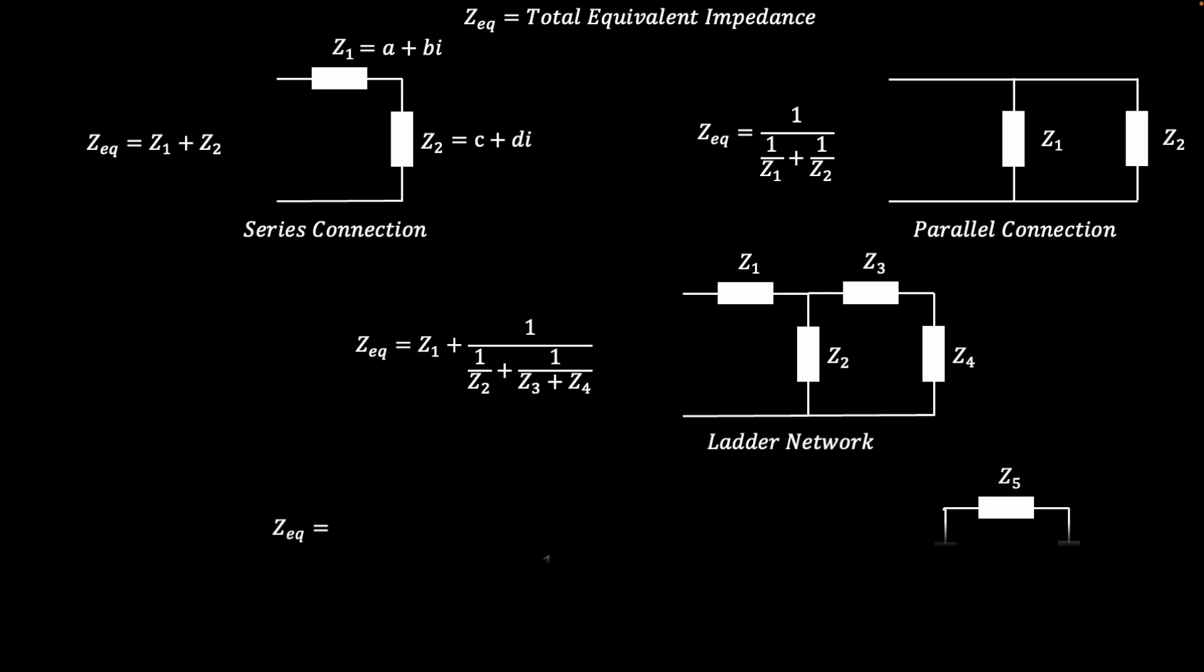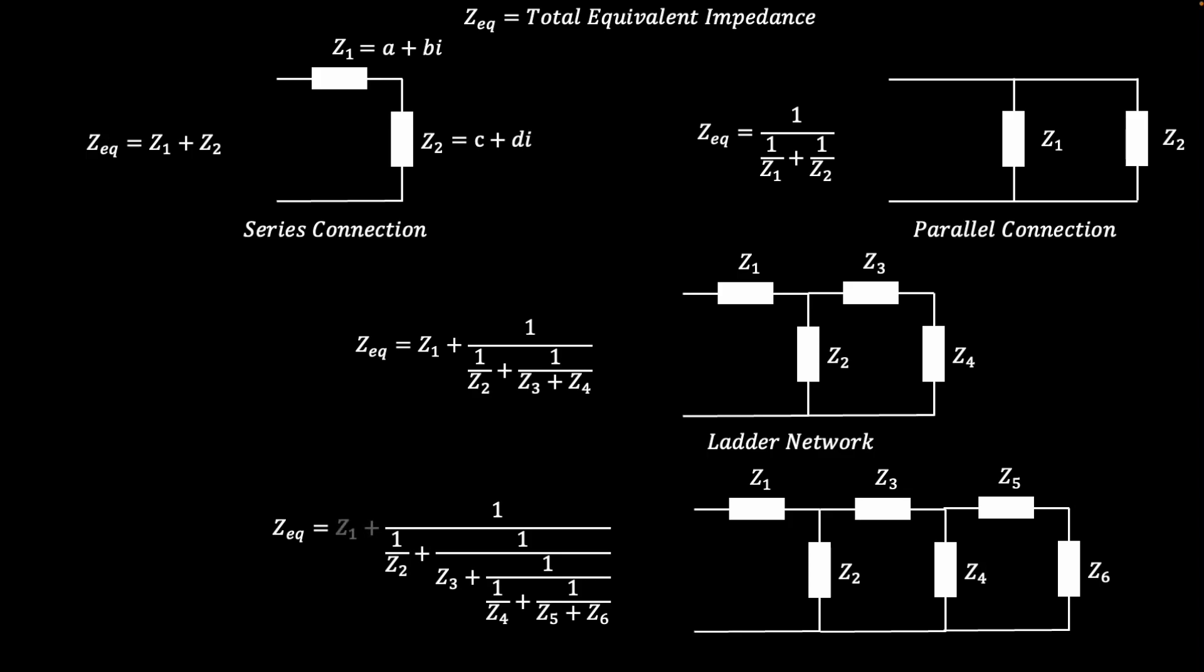Adding one more link into the ladder network and constructing the total impedance formula reveals a structure called a continued fraction. This type of fraction provides a template for quickly calculating the total impedance of many series and parallel connections.